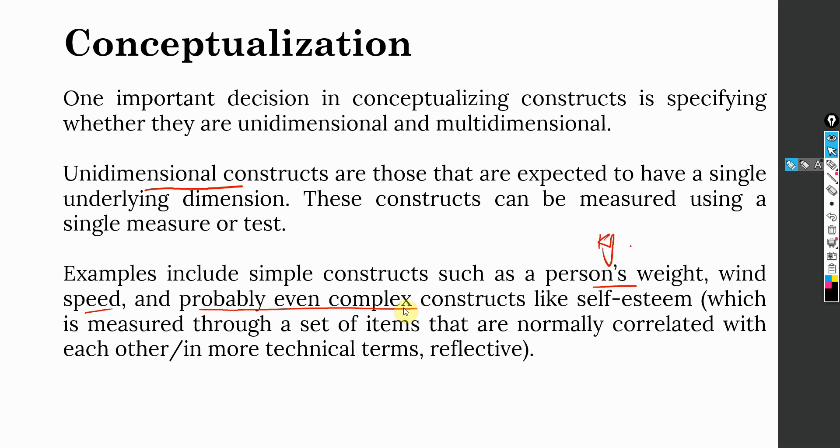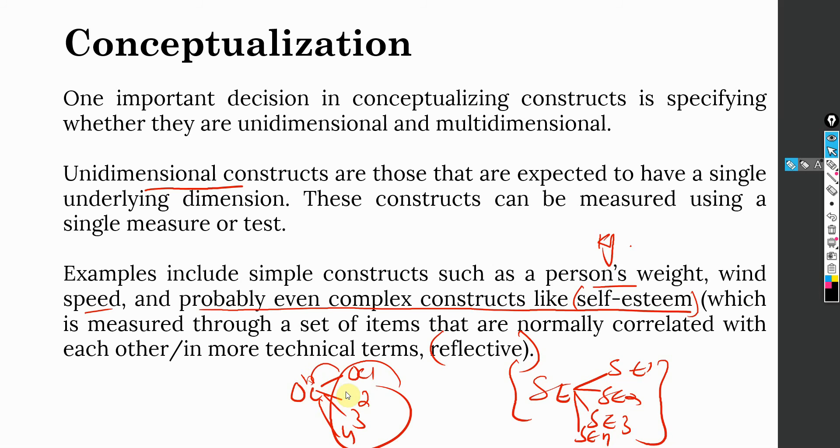These complex constructs are measured through a set of items. Self-esteem is measured using SE1, SE2, SE3, SE4. They are normally reflective at first order or lower level. For example, organizational commitment is measured using four items: OC1, OC2, OC3, and OC4. These four items are measuring organizational commitment. In this case, they tend to be reflective, that is interchangeable. Even if you delete one, your construct does not lose its content validity.